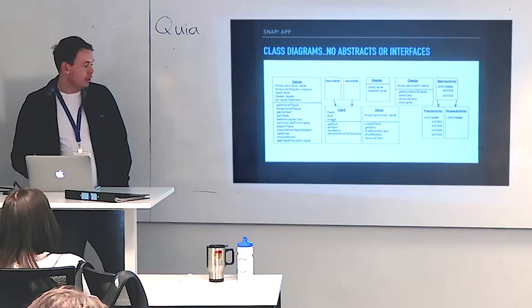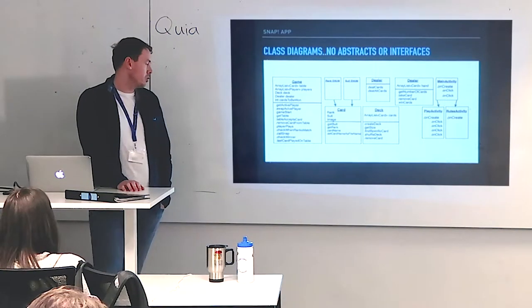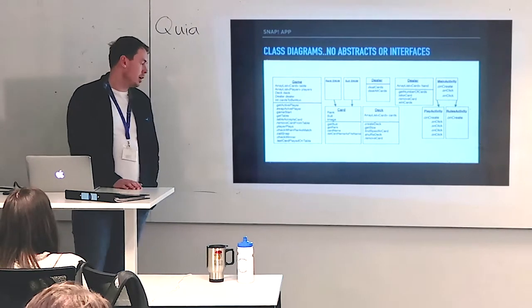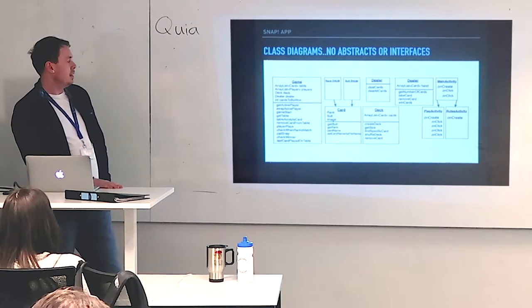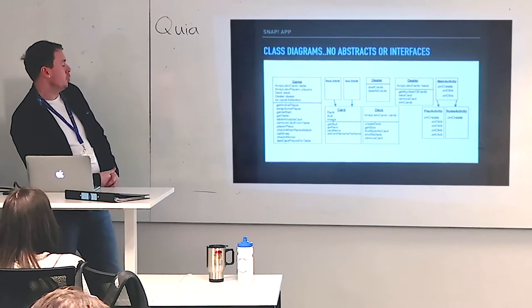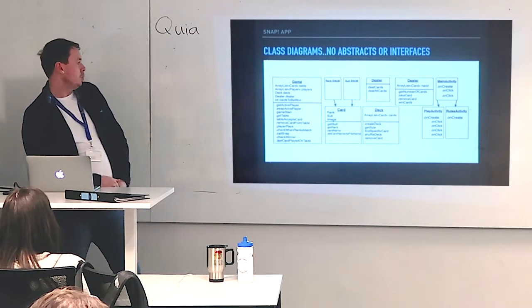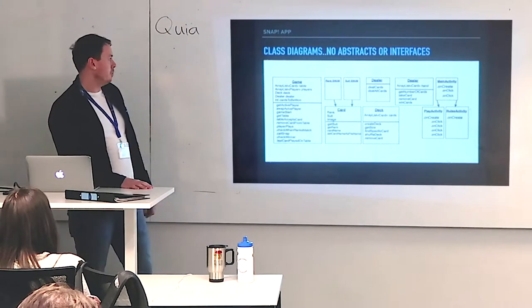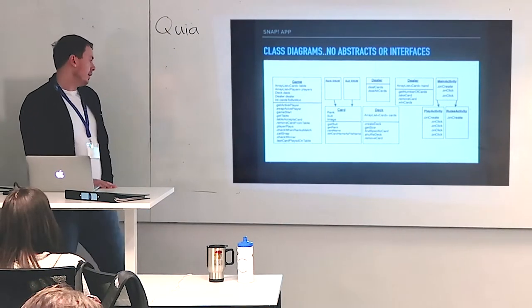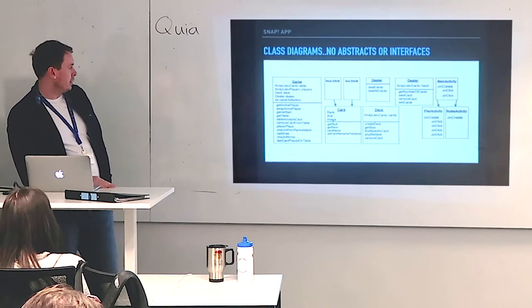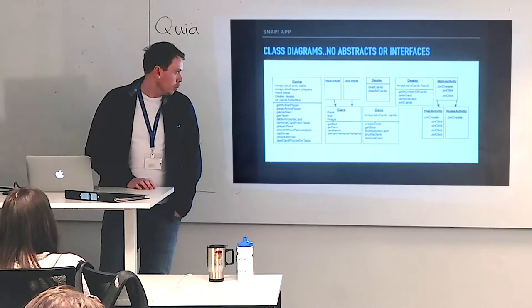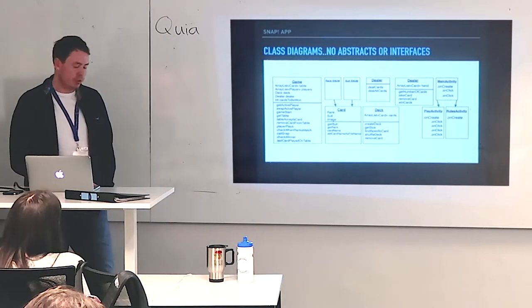It became quite apparent early on when I was designing the class diagrams that there wasn't going to be any need for abstract classes or interfaces — I'm sure I could have worked something in, but there didn't seem to be any need. We've got two enums, the same as what we've done in the high card game — rank and suit — and all the methods in each of the classes: Game, Card, Deck, Dealer, and we've got the main activity, player activity, and rules activity.